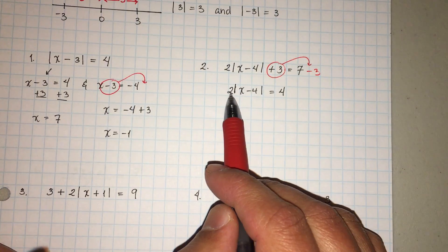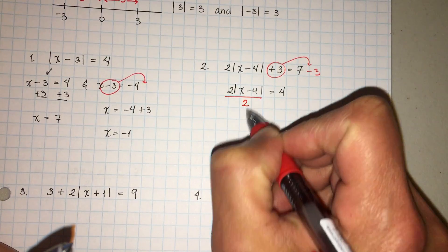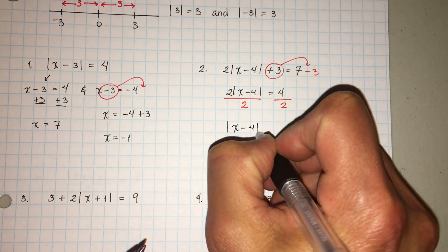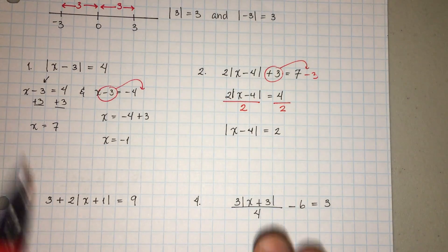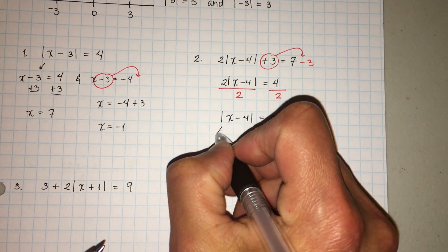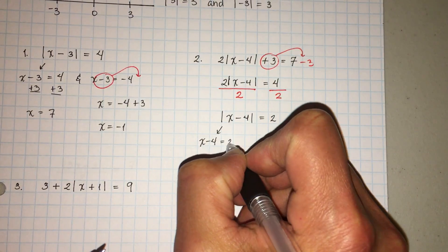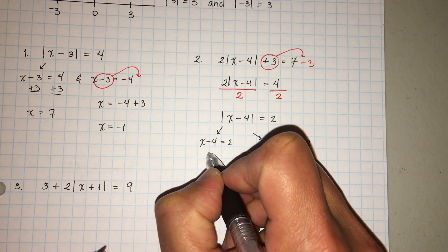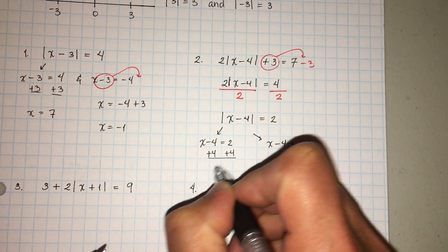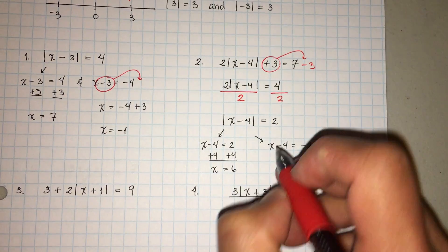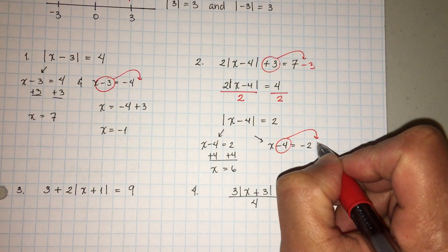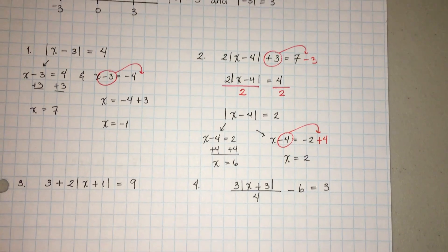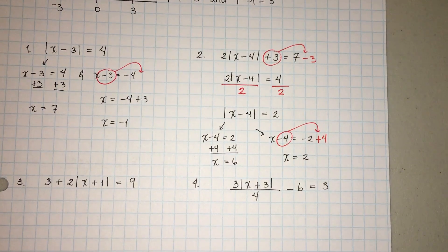The two is right next to the absolute value, which means multiply, so the inverse is division. Two divided by two is one, so now we have the absolute value of x minus four is equal to two. This looks a lot like number one, so we split them up: x minus four is equal to positive two, and x minus four is equal to negative two. Adding four to both sides, x is equal to six, and x is equal to positive two. Those are your two solutions — esas son las dos soluciones.